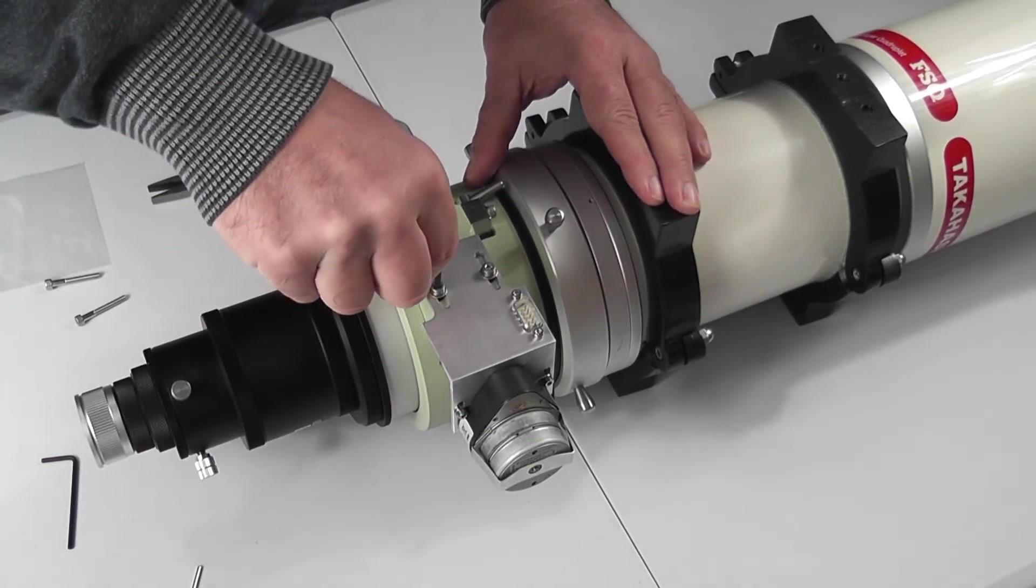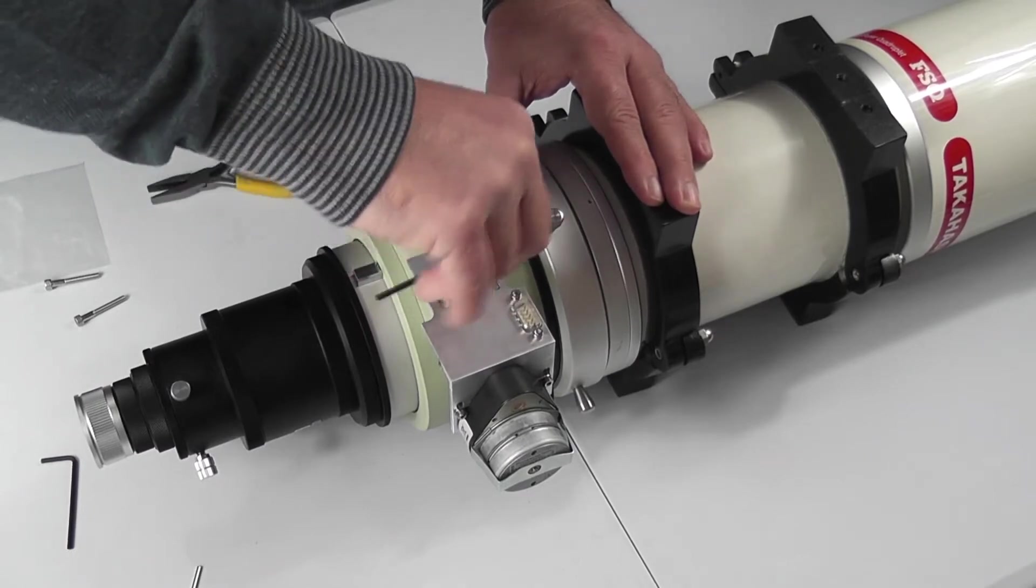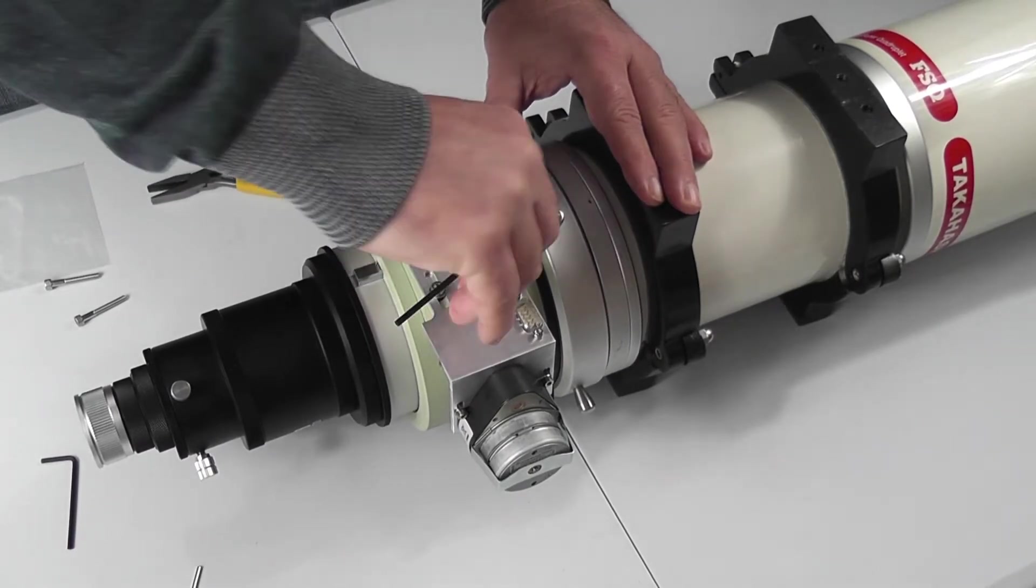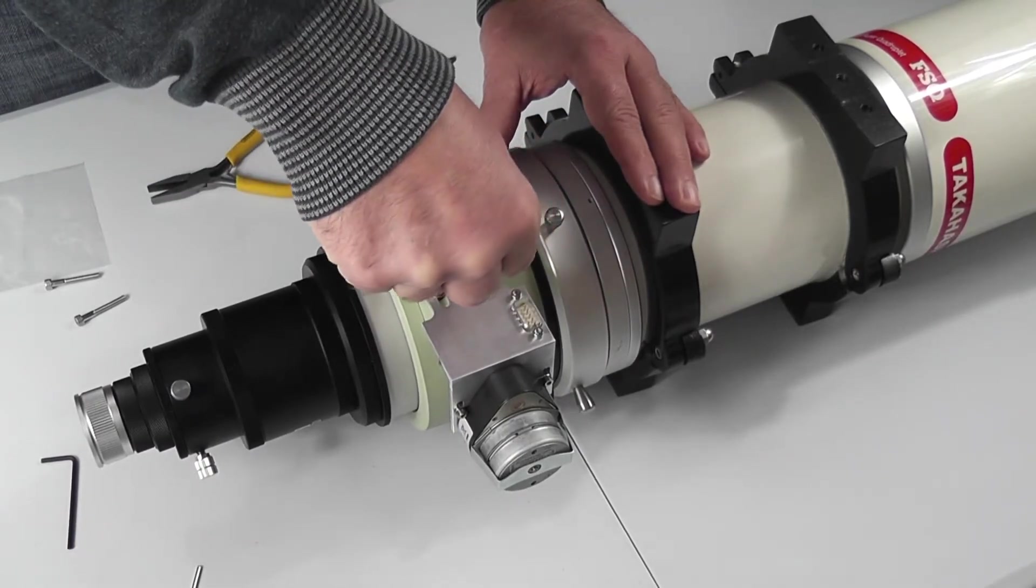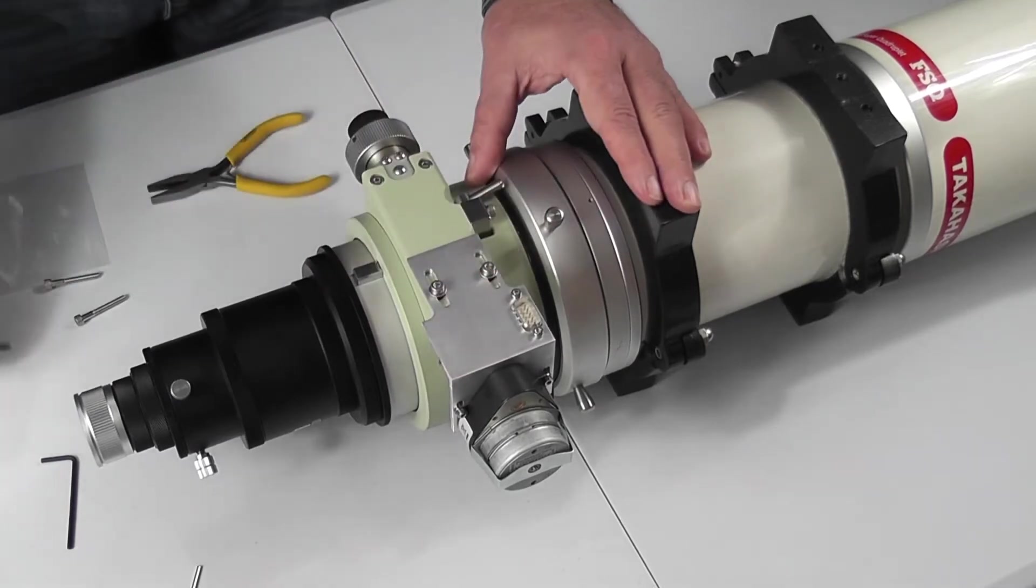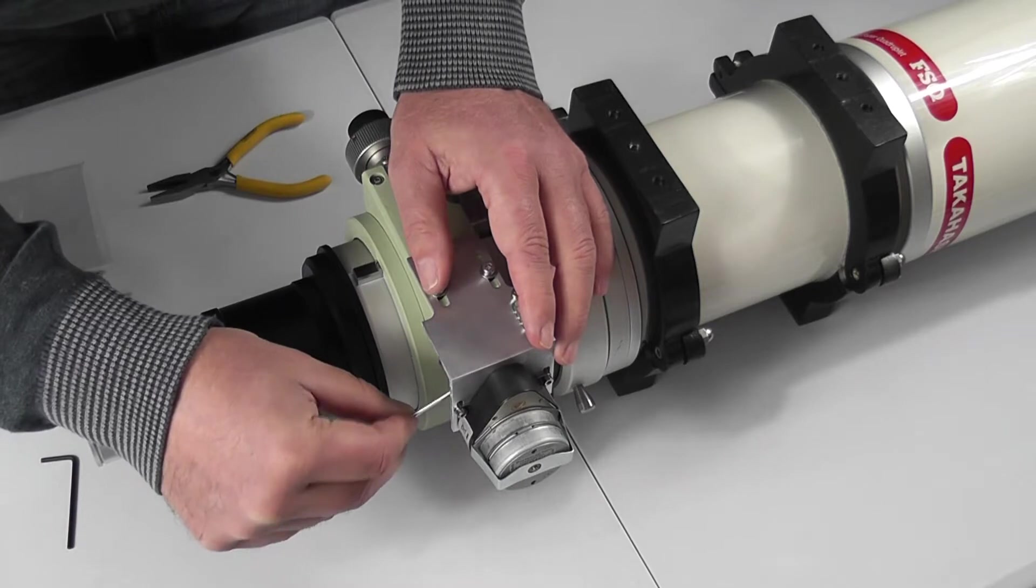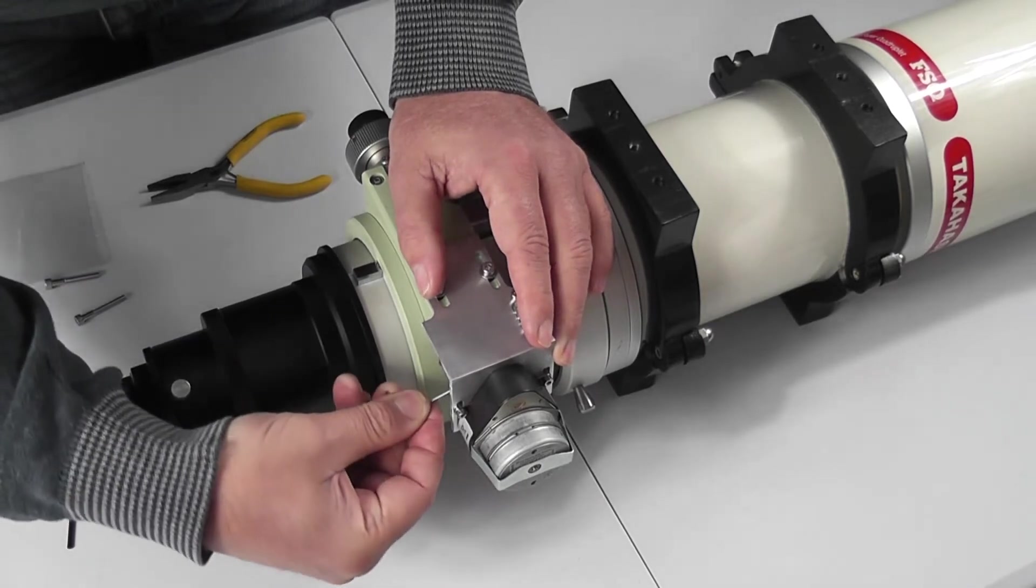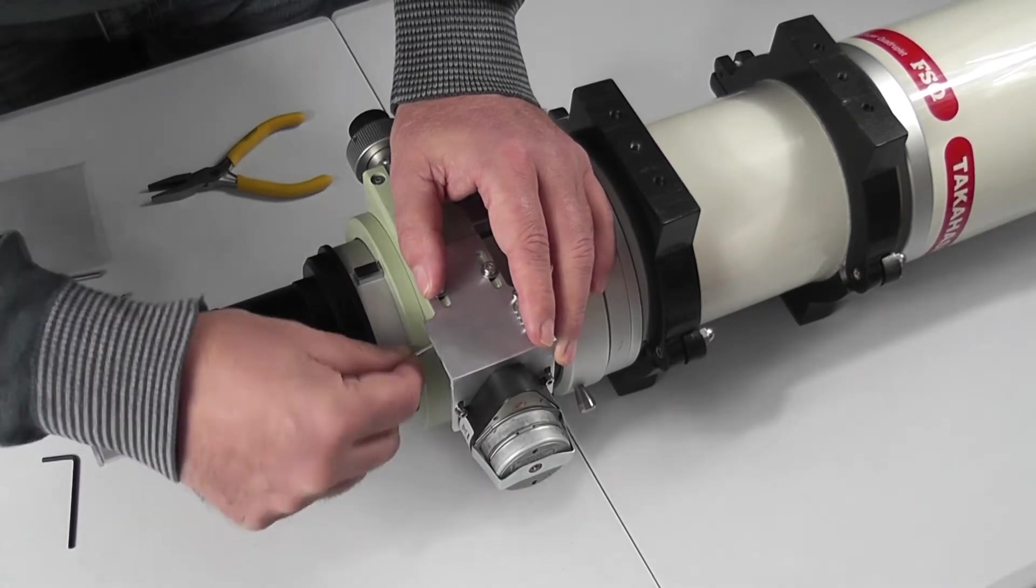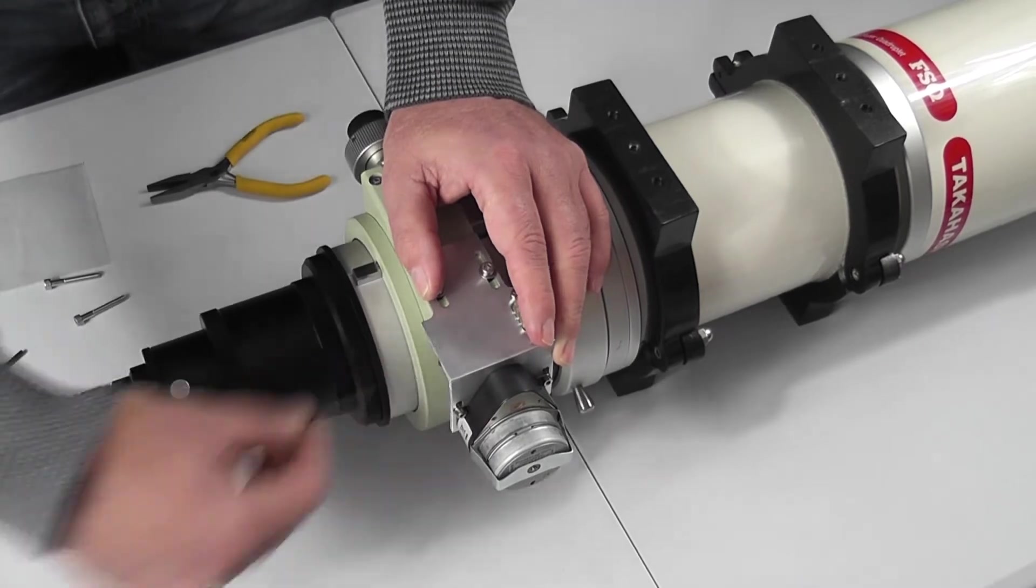And then finally just give the top two bolts a final tighten home. Make sure they're nice and tight, but always be careful not to over-tighten the bolts as they're only small and it's very easy to strip the aluminum casing. And then just make sure that we give the coupler a last little tighten home to make sure that's sat right.